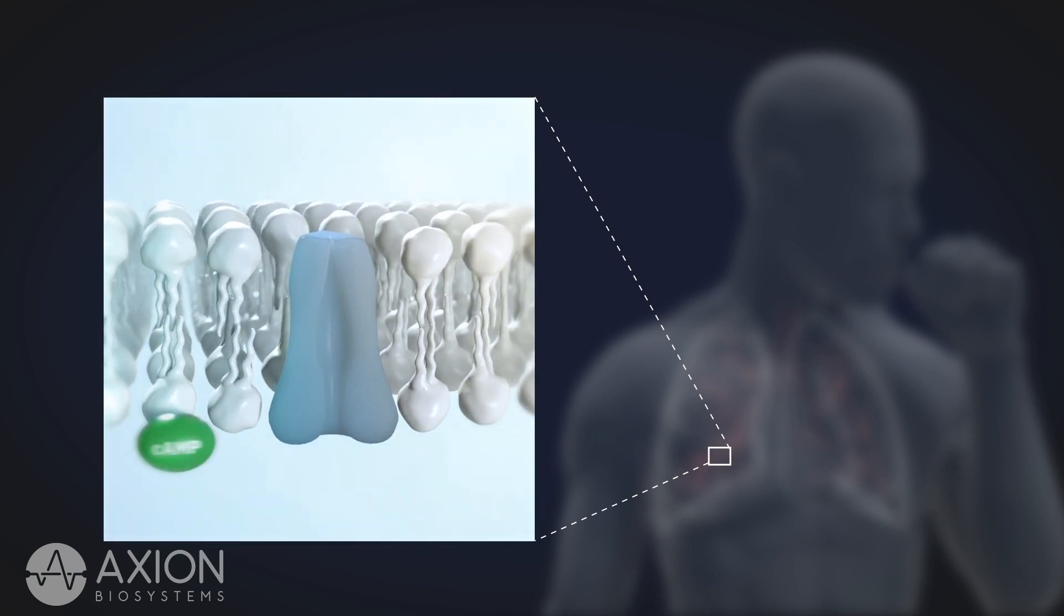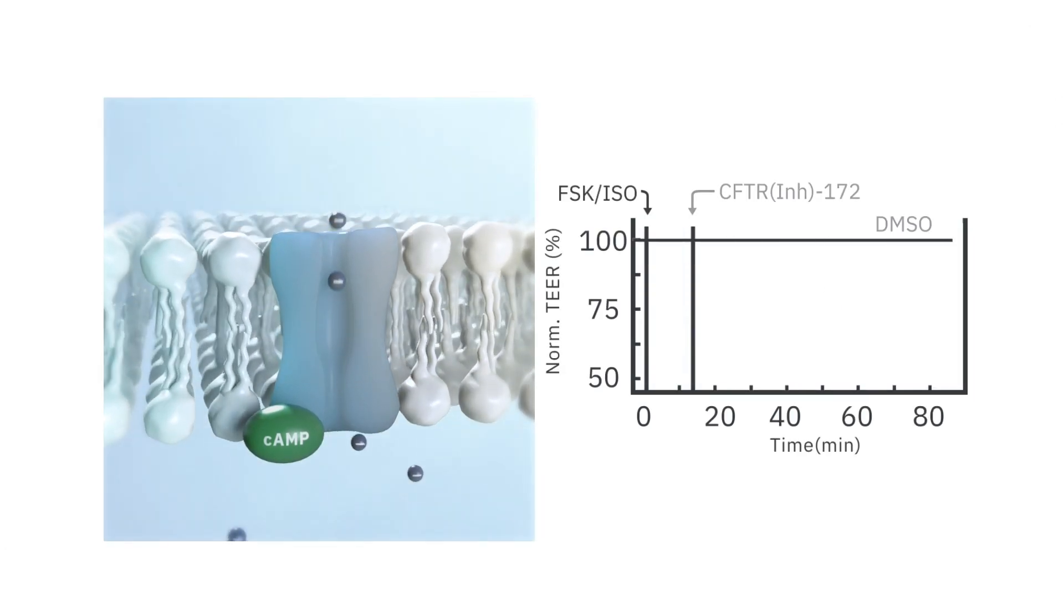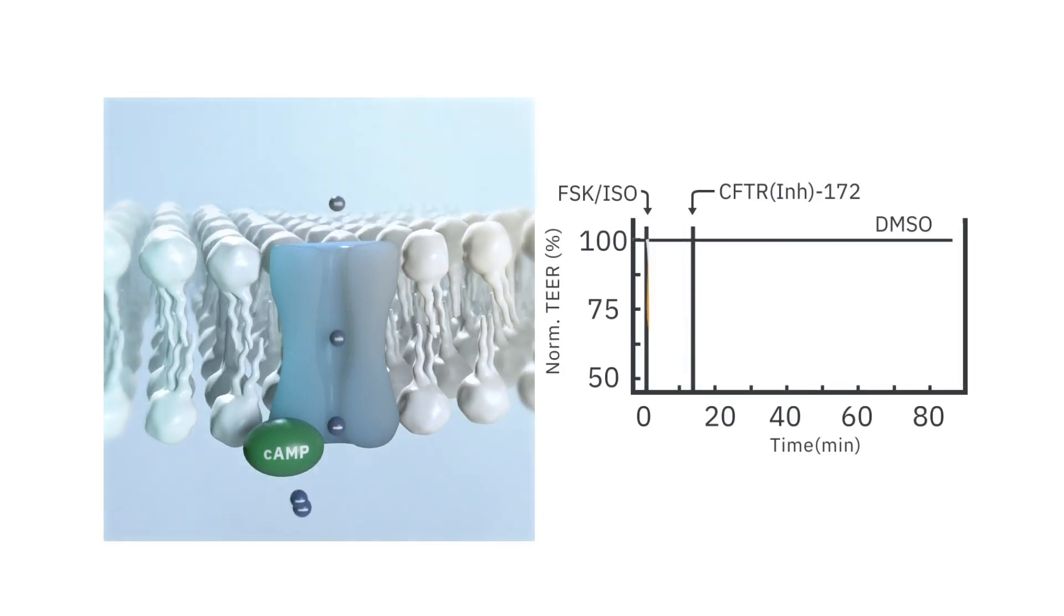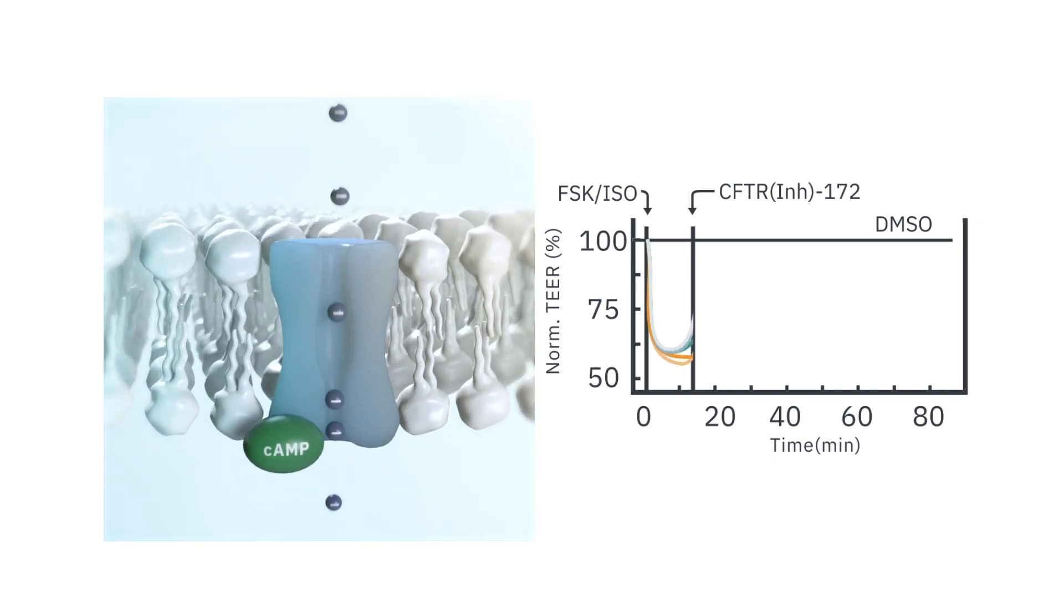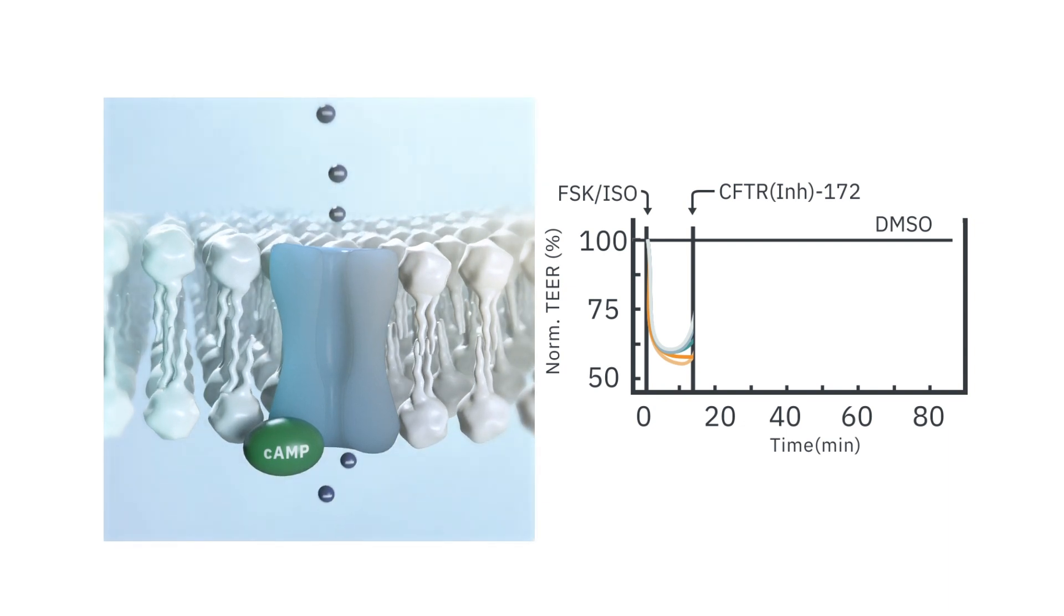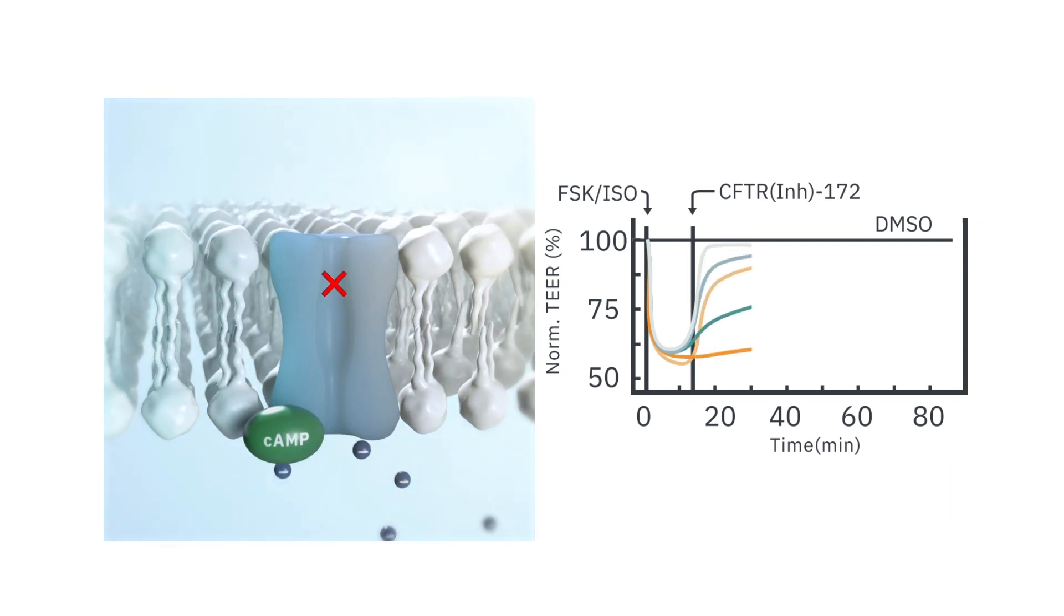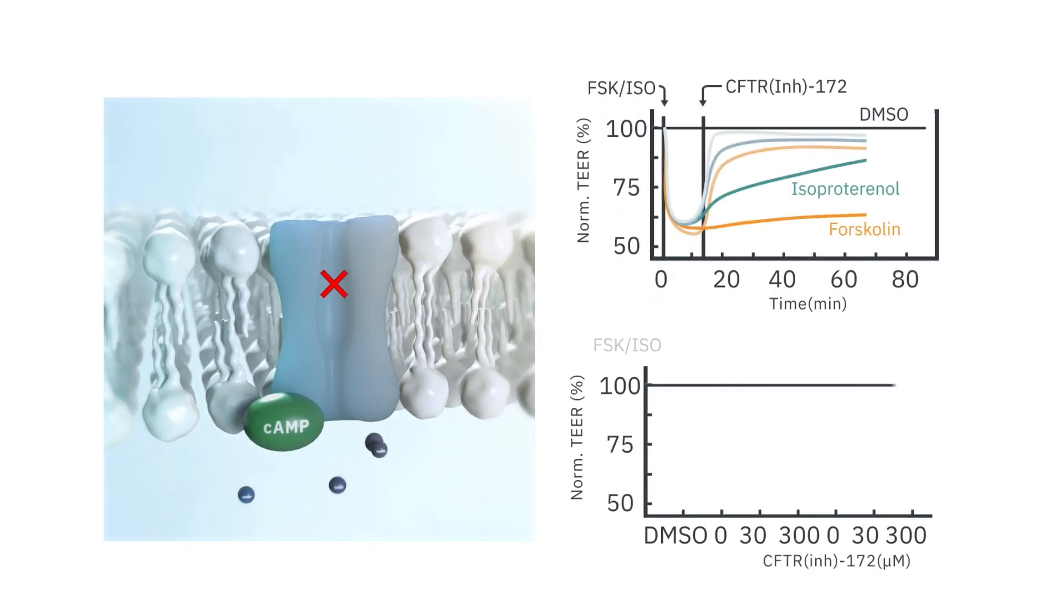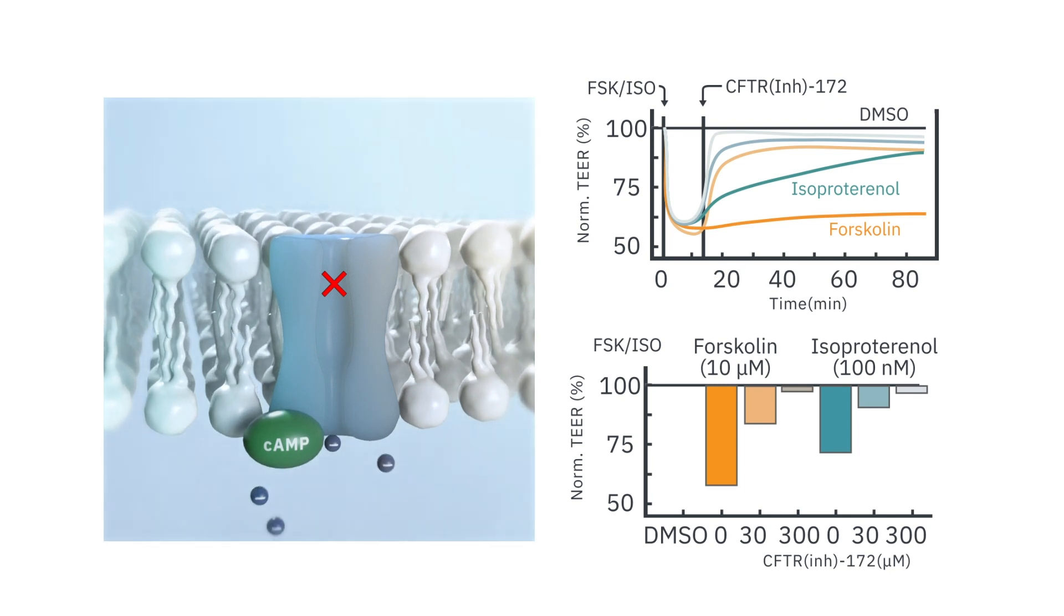the channel is stimulated by cyclic AMP production. Upon stimulation, CFTR opens to allow ion transport across the cell membrane, resulting in a rapid and substantial drop in TIR. A selective CFTR inhibitor blocks this decrease in a dose-dependent manner, confirming CFTR as the underlying mechanism of the response.